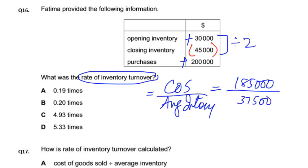Ab kya karein? 185,000 divided by 37,500. Hamara answer hai 4.93 times. Yeh humne nikala times mein.